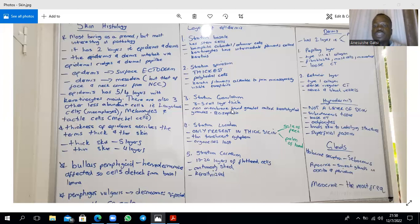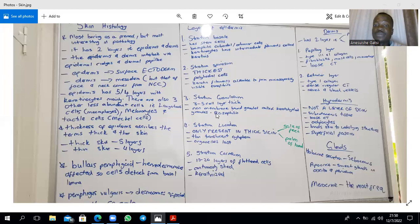The stratum granulosum is the most superficial layer in reference to the non-keratinized portions of the epidermis. It is three to five cells thick and is composed of non-membrane-bound granules called keratohyaline granules, hence the name stratum granulosum. It is highly basophilic under the light microscope. Those granules contain proteins rich in cysteine and histidine, which are precursors of a protein known as filaggrin. Filaggrin is responsible for the aggregation of keratin filaments, seen as keratinization in the stratum corneum.